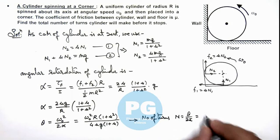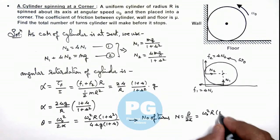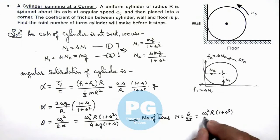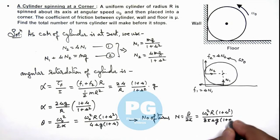Which is equal to omega not squared r multiplied by 1 plus mu squared divided by 8 pi mu g multiplied by 1 plus mu. That is the result of this problem.